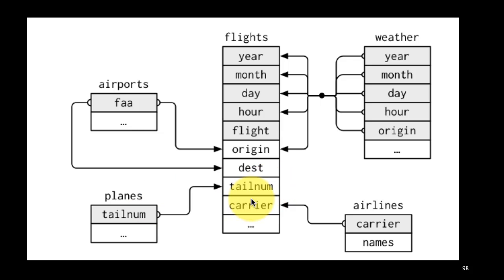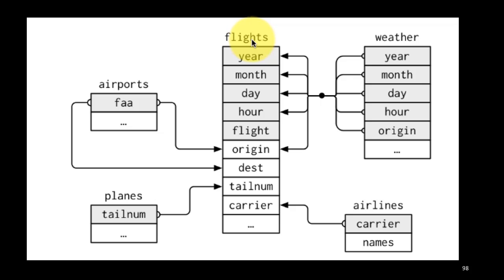For the connection between the flights tibble and the planes tibble, the column name is tailnum, and the column name is exactly the same in both. Similarly, within the flights tibble the carrier column — which indicates the airline that operated the flight — also has a column called carrier in the airlines tibble, so the column names match there as well.